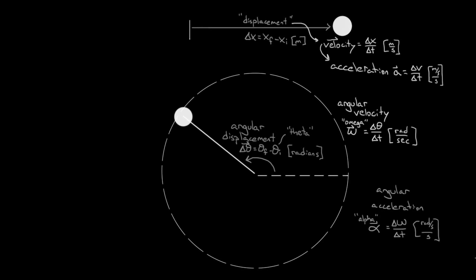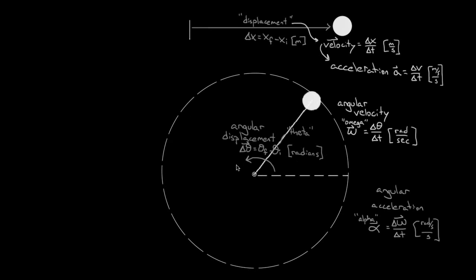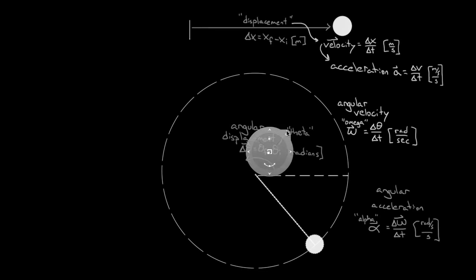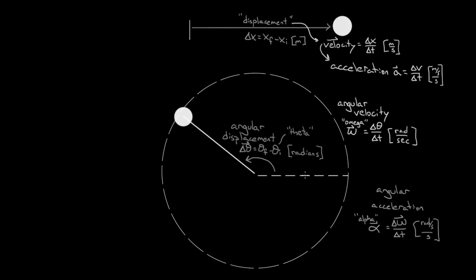The direction that the angular acceleration points will be in the direction of the change in the angular velocity. If this tennis ball is speeding up, the angular acceleration is pointed in the same direction as the angular velocity. And if the angular velocity is slowing down, the angular acceleration points in the opposite direction. You might wonder why we need to define all these new angular variables when we already had the regular variables. The answer is that it turns out to be really convenient to do so.